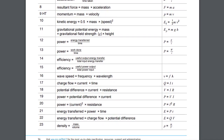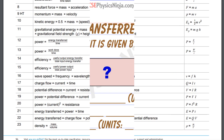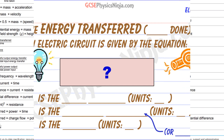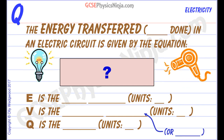It's much better to learn the equations using an active learning method, and this is where question and answer flashcards make a massive difference — just like this one. So here's how to learn your GCSE physics equations in three easy steps.